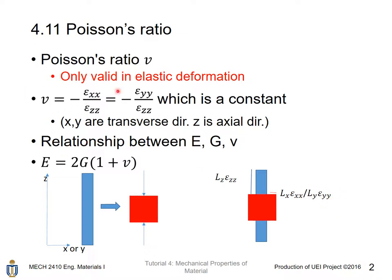And there is a relationship between E, G, and V: E is the elastic modulus, equal to 2 times G — G is the shear modulus — times (1 plus V), not squared, but in brackets.